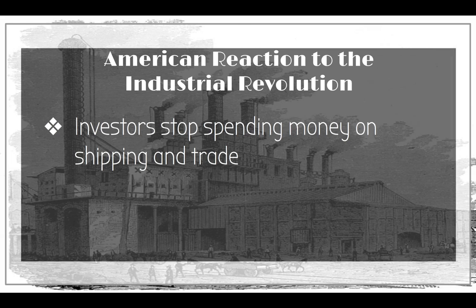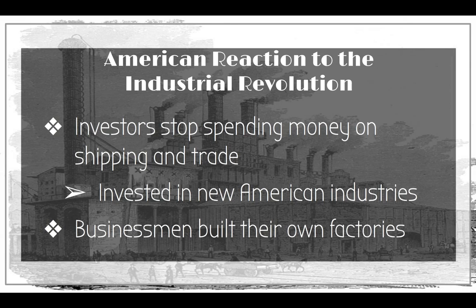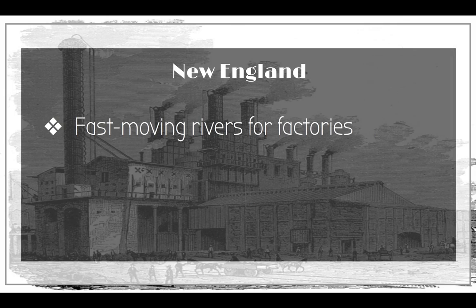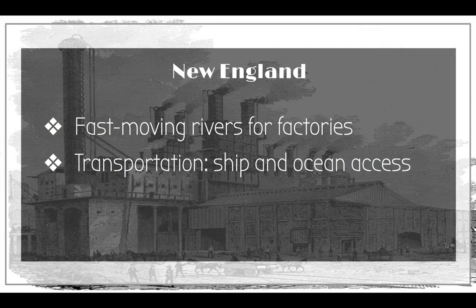Because of the War of 1812 and the naval blockade, investors stopped spending their money on shipping and trade and instead invested in new American industries. Businessmen who were spending money on factories overseas are now building their own factories here in the United States. Because water was a source of power, factories were built next to rivers. Transportation was very readily available in New England in terms of ship and ocean access, because New England is on the water side. With a naval blockade, goods couldn't come in but goods could leave.